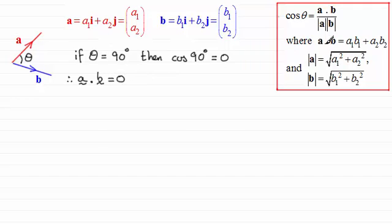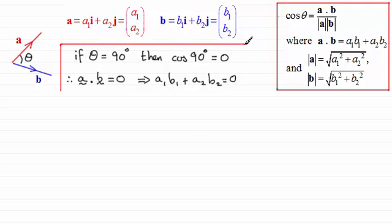And by this result here it would follow that a1 multiplied by b1 plus a2 multiplied with b2, well that too must equal 0. So this is a very important idea which can easily be extended to three-dimensional vectors.